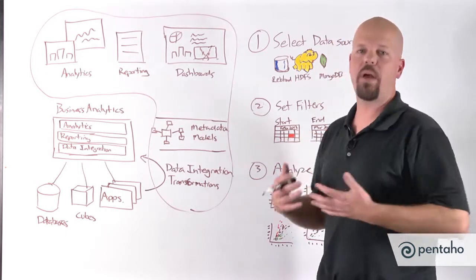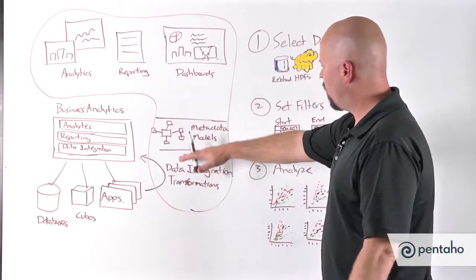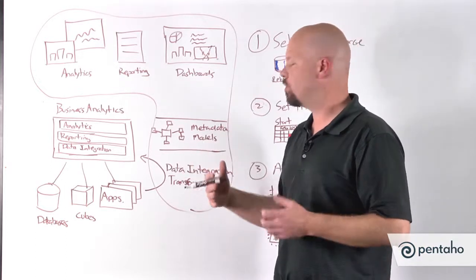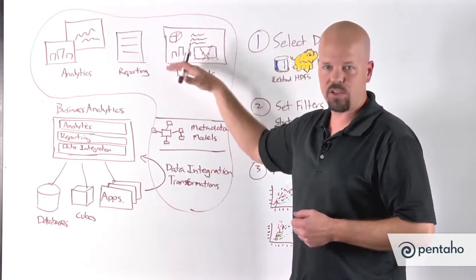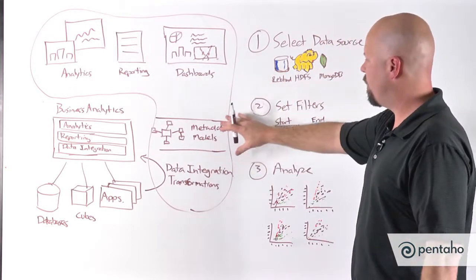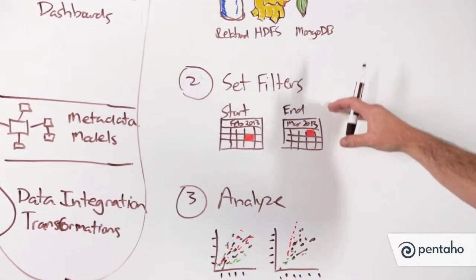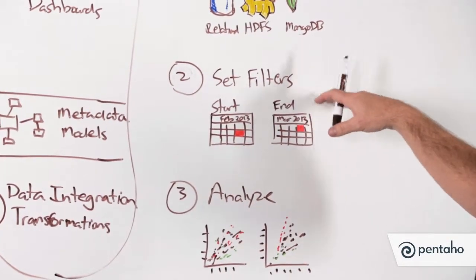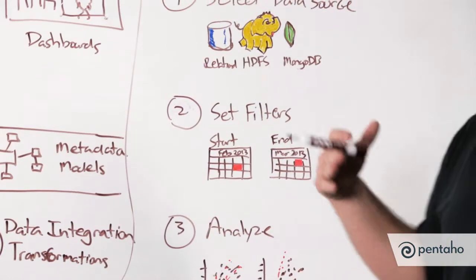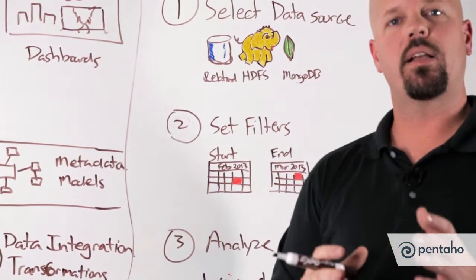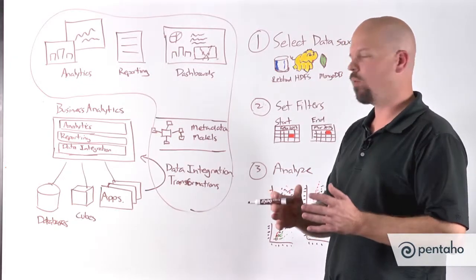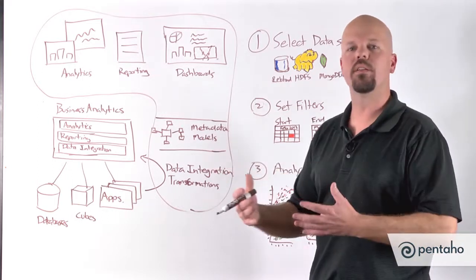Now here's where some of the magic comes in. I mentioned that once you've pointed at data, what really gives you that ease of use in terms of end user access and data discovery type use cases is this metadata model. So what InstaView will do at this point after we've pointed to our data, we've set our filter ranges, is it's going to automatically look at the data coming in and generate these semantic models based on what it discovers.